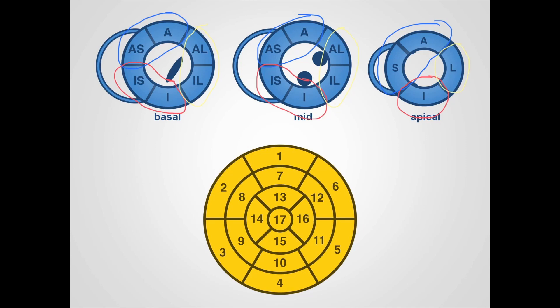The relative supply of both the circumflex and right coronary arteries depends upon arterial dominance. In most cases, the right coronary artery is the dominant artery. When describing regional wall motion, we normally use this 16-segment model. When we describe myocardial perfusion, we sometimes include a 17th segment, which is the apical cap at the very tip of the left ventricle, which is also normally supplied by the LAD.